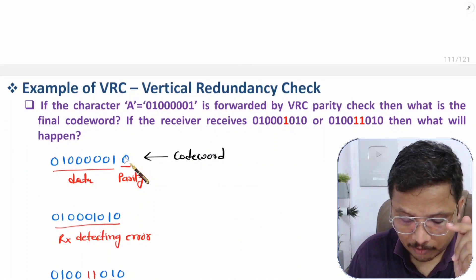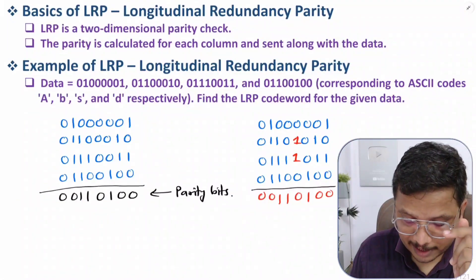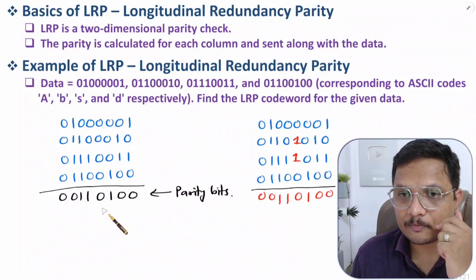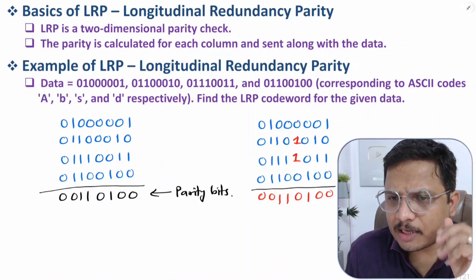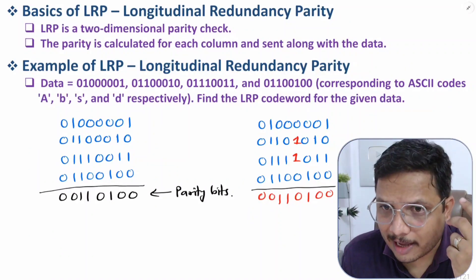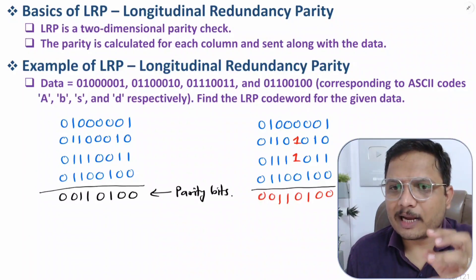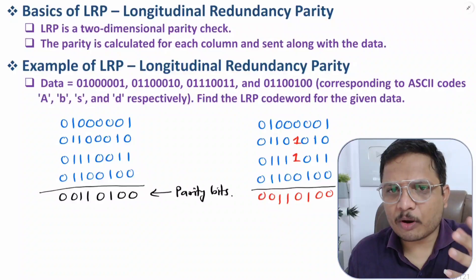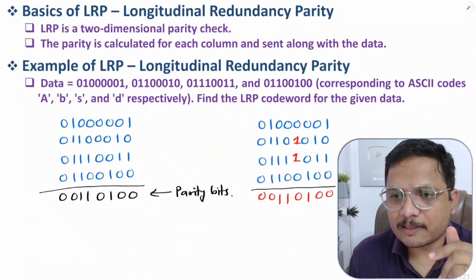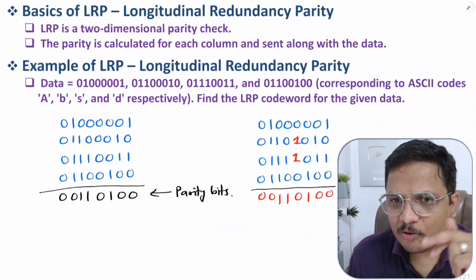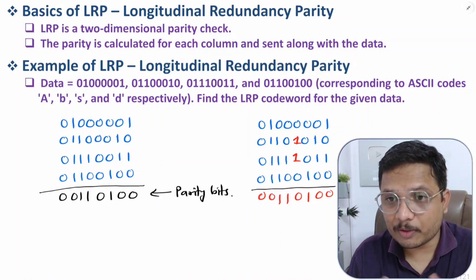Still, compared to VRC, LRP can detect more errors. However, in VRC we add only one redundant bit, while with LRP we add more bits as redundancy. The disadvantage of LRP is adding more redundant bits. Usually, parity checking is not used much in computer networks, but exam questions do appear on this topic. If you have anything to share, please note it in the comment section. Thank you so much for watching.